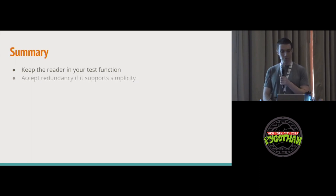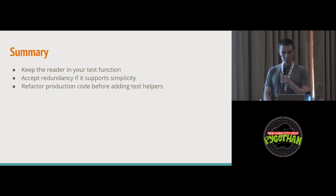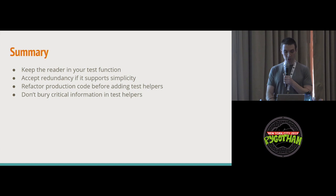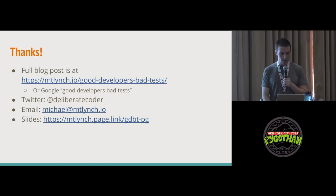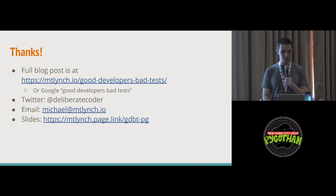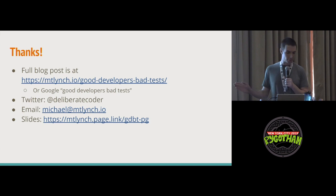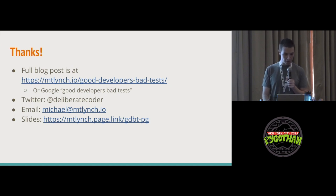To summarize: keep the reader in your test function; accept redundancy if it supports simplicity; refactor production code before adding test helpers; don't bury critical information in test helpers; go crazy with long test names; and embrace magic numbers — they're your friends. This talk was originally a blog post. If you want to find it online, you can go to my blog or just Google 'Good Developers Bad Tests.' I'm on Twitter at Deliberate Coder, and the slides are at mtlynch.page.link slash gdbt-pg.